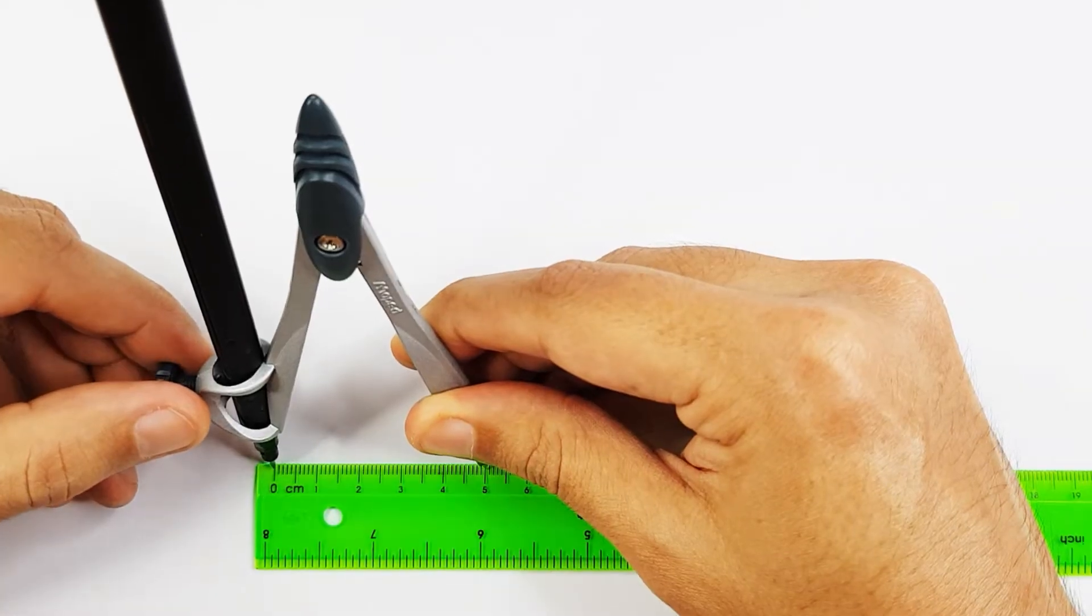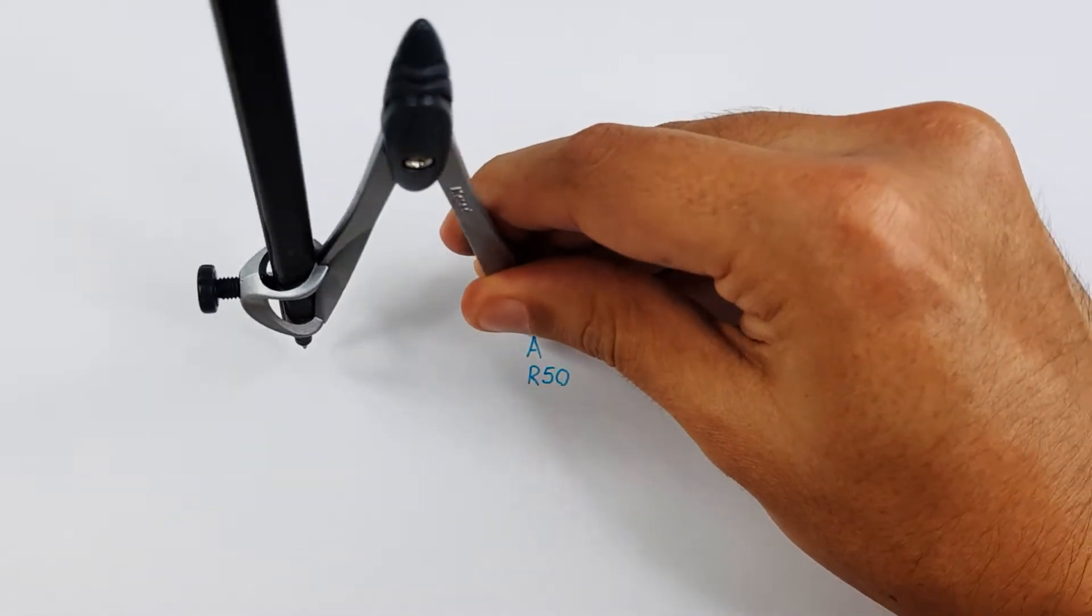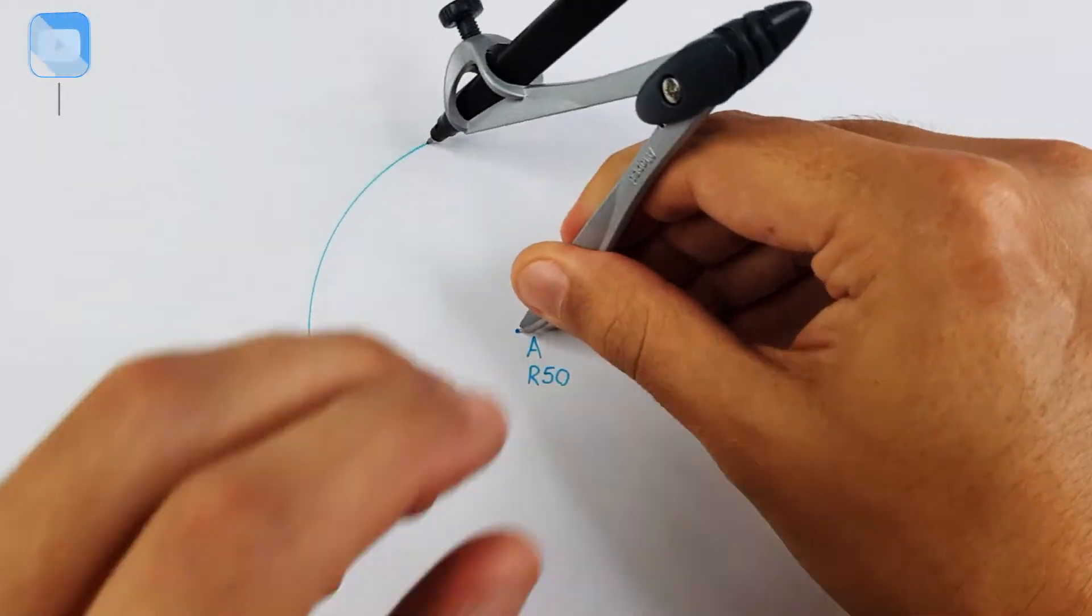Start off by adjusting your compass to 50 millimeters. Use this measurement and A as your middle point and construct your circle.